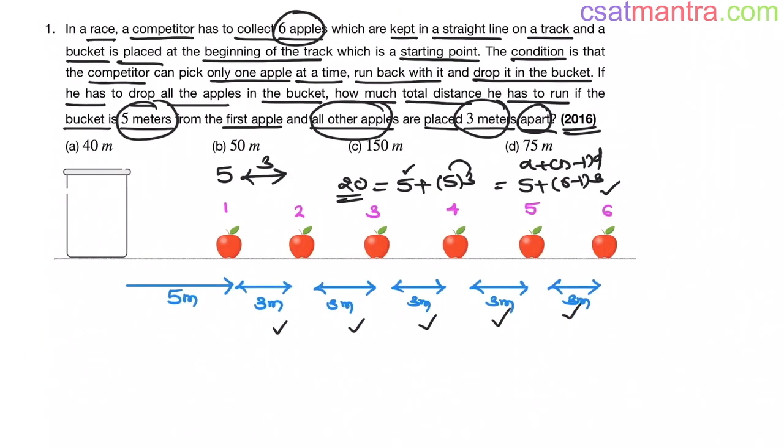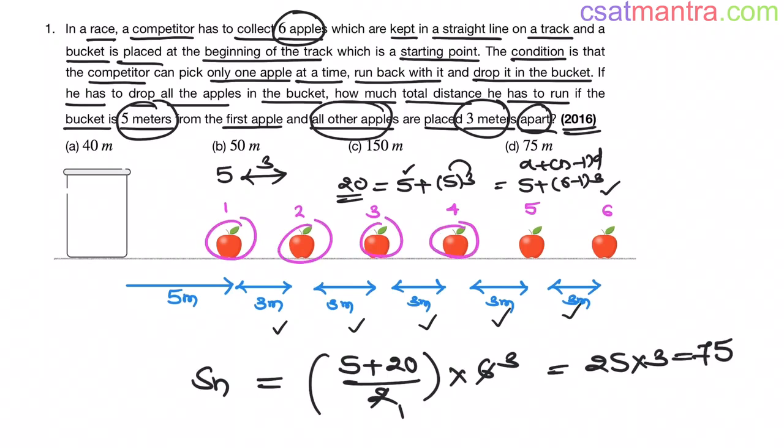Now, in arithmetic series, sum of n terms is average of first term plus last term. Last term is 20. So the total distance average into number of terms, 6. 25 into 3 that is equal 75. Now, sum of the distances of these apples from bucket is 75.